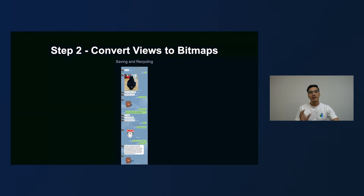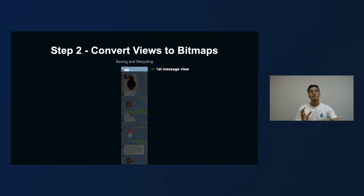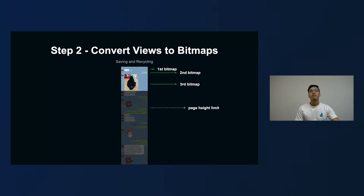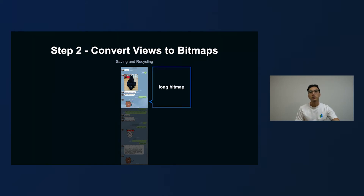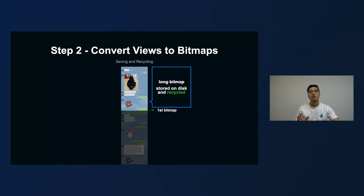So we introduced the approach of saving and recycling to reduce memory usage. Let's say this is the long screenshot we have as our result. For the first message view, we show it and convert it to a bitmap — we get our first small bitmap. Then the same for the second and third messages. For every page, we have a page height limit. Until you hit that limit, we combine all the small bitmaps into one long bitmap. The long bitmap is then stored in cache, and before we move on to the next message, we store it on disk in the background and recycle the bitmap to release memory. This is what I call saving and recycling.